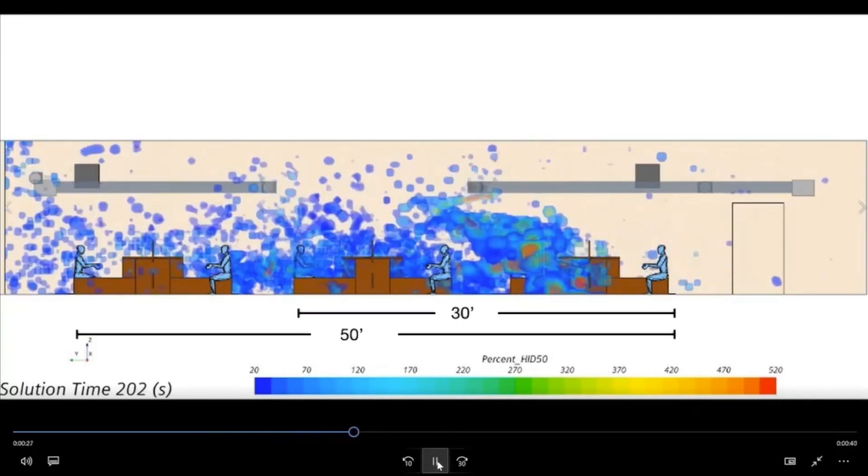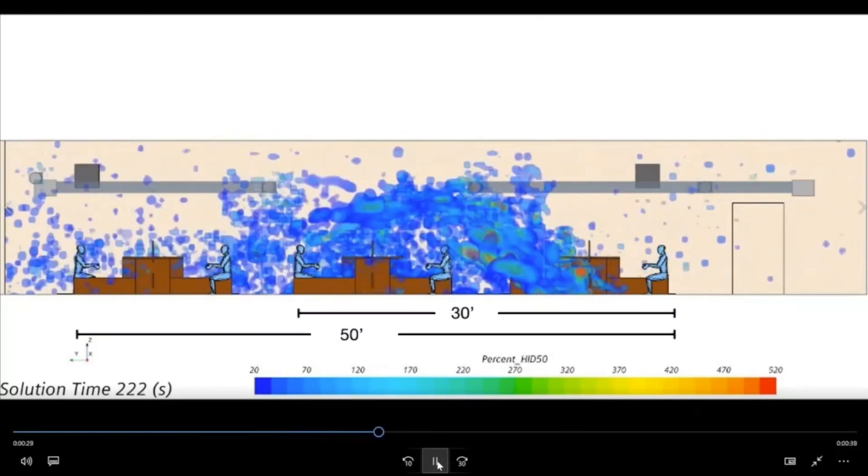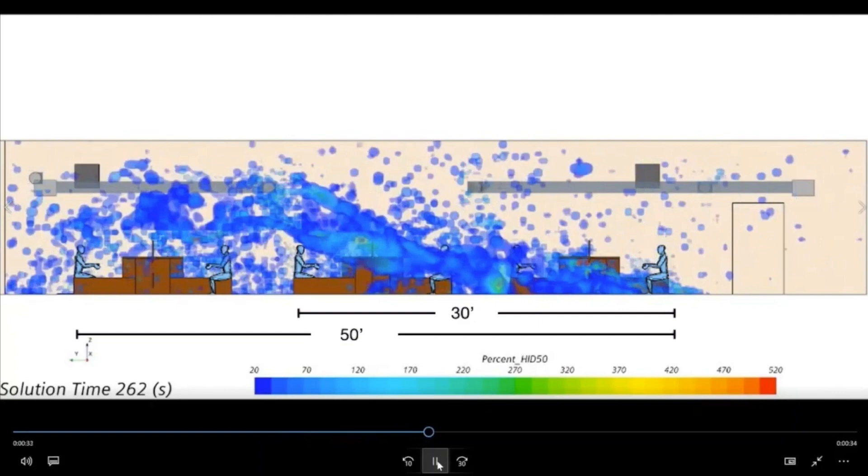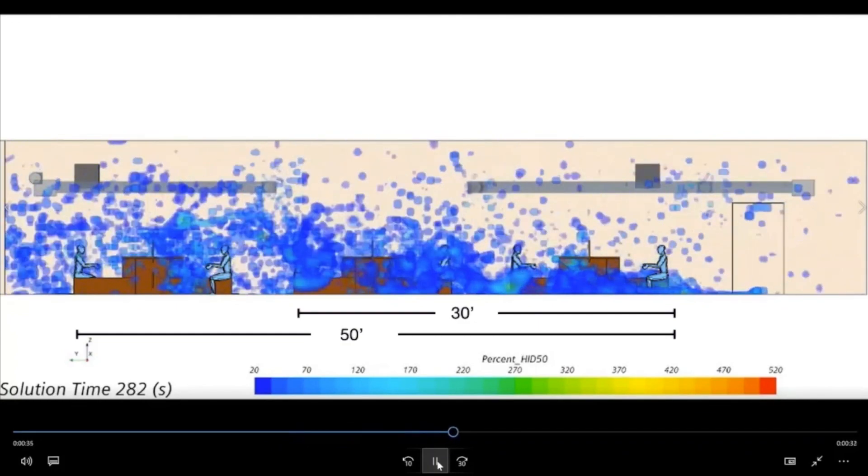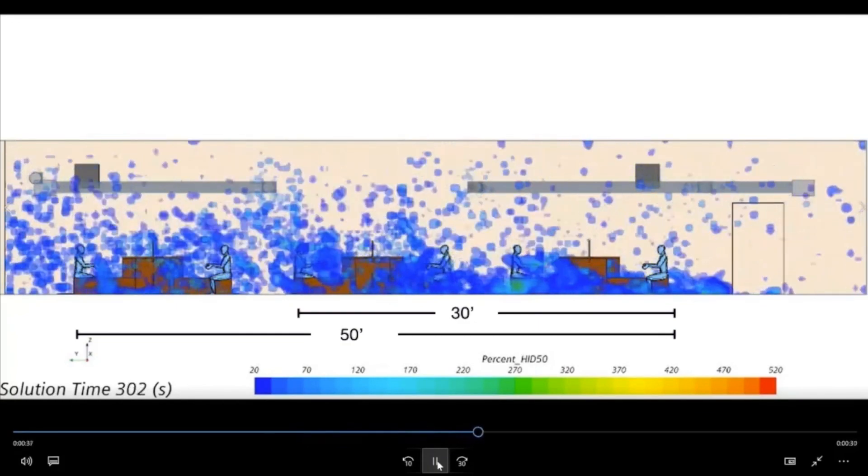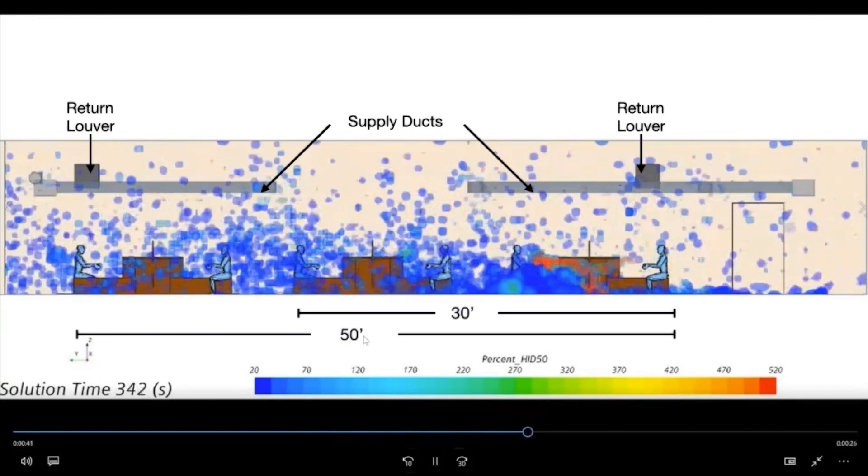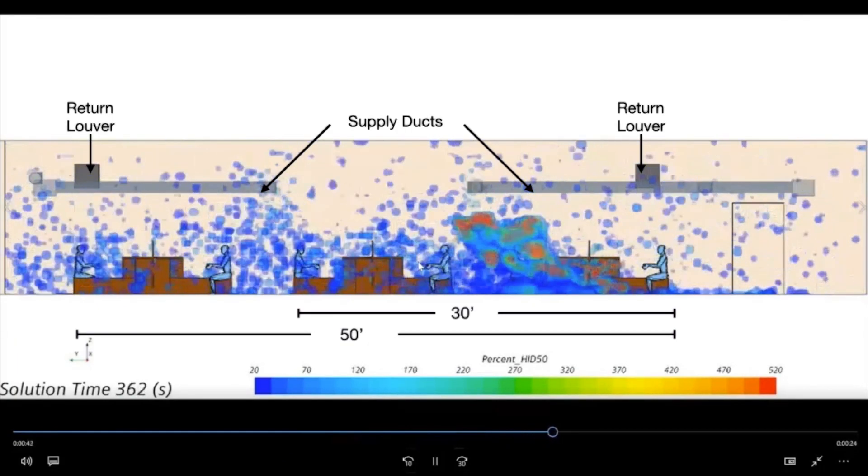Notice that a cloud carrying a dosage five times that HID 50 is carried 30 feet across the studio, and a normal infectious dose can travel more than 50 feet indoors. Finally notice that the cloud of virus never reaches the mechanical system where filters could be effective.